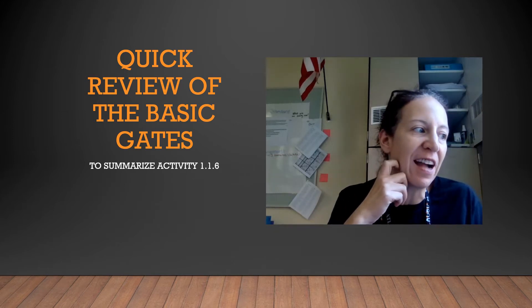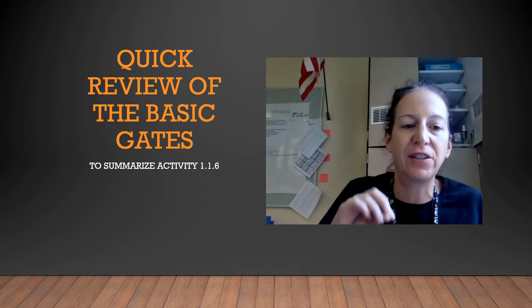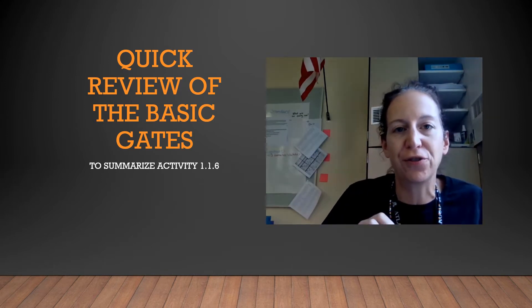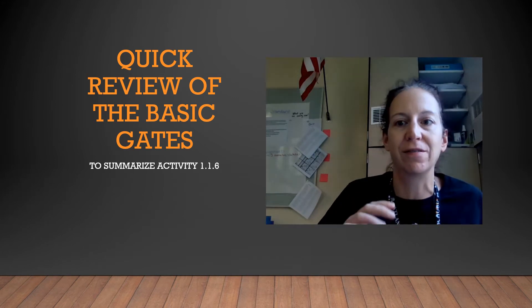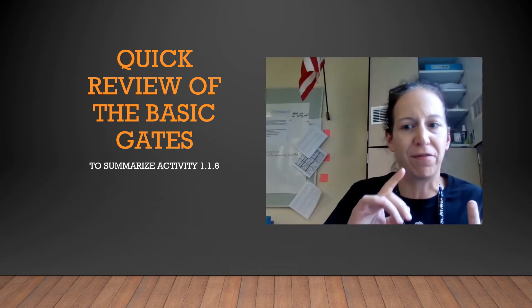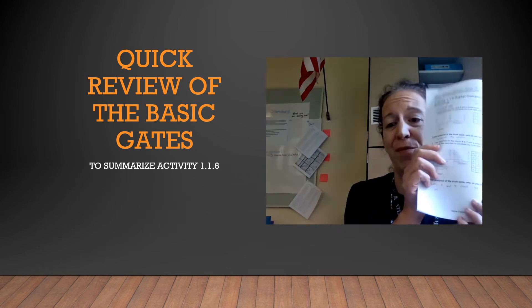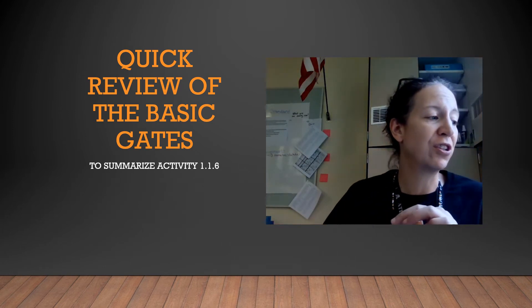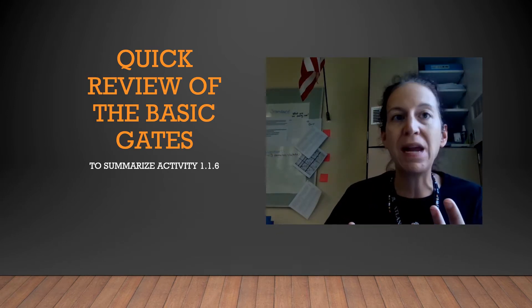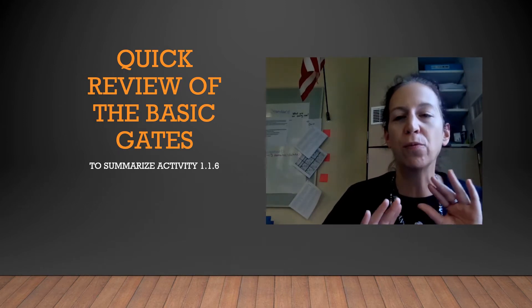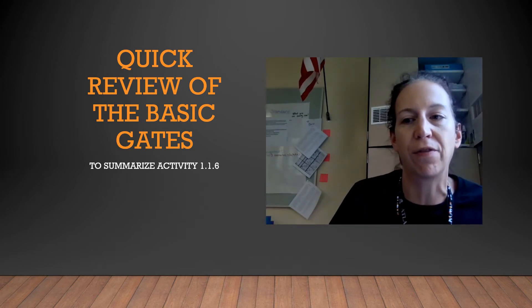I just finished grading the activities 1.1.6 on the different kinds of gates, and I wanted to make sure that I took time to review what each of those gates was so that you're able to take away from the activity the important details. It involved a lot of Multisim and filling out truth tables, and then you had to answer the question from the analysis of the truth table, what do you think these gates mean? For the most part, you guys were spot on. There were a couple of explanations that were a little bit shaky, so I just wanted to straighten all of those out.